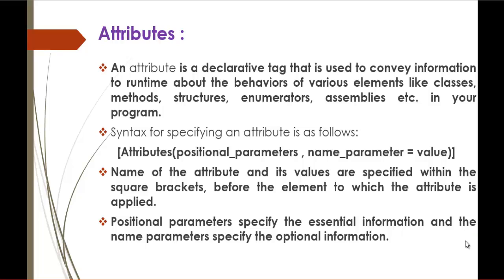Here you can observe the syntax for specifying an Attribute. You can observe the square brackets and common brackets. Instead of the 'attribute' keyword, you specify the attribute name. It takes two parameters: positional parameters and the name parameter. Positional parameters are key information to the attributes and are essential — you must specify the positional parameter. The name parameter, however, is optional. That is the syntax of an attribute.